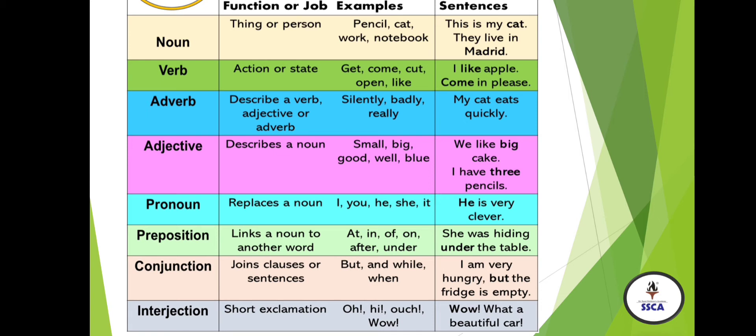Example sentence: 'This is my cat.' Here, cat is the name, so this is the noun. Next, verb. Verb is any action or state. Examples: get, cut, like. Example sentences: 'I like apples.' 'Come in place.' Here, 'like' and 'come' are the verbs because these are actions.